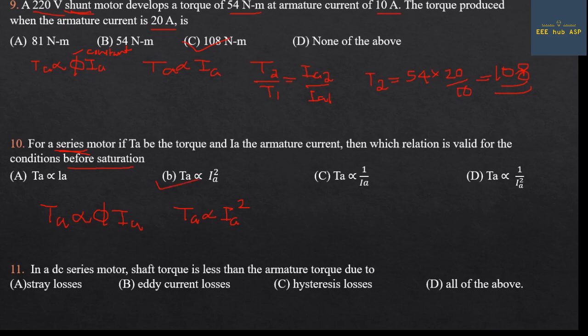Eleventh question: In a DC series motor, shaft torque is less than armature torque due to mechanical losses. The load torque accounts for frictional and windage losses.